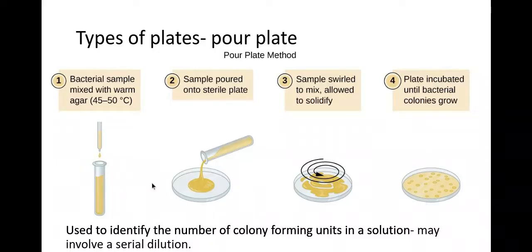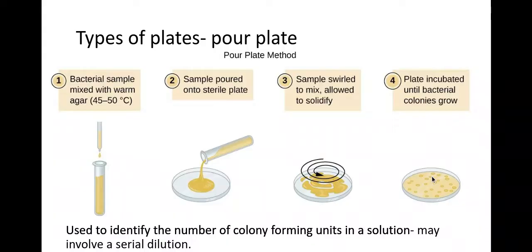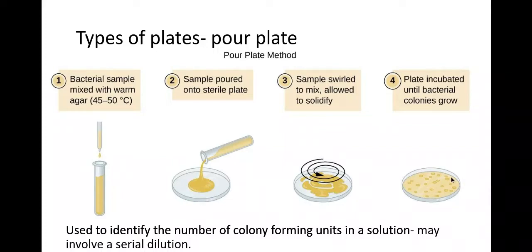However, if the sample is too concentrated, you'll get too many bacterial colonies forming on the plate and you won't be able to count them. So if you want to know how many colonies are in your bacterial sample, you may need to dilute the sample first so that you can count the number of colonies, and then multiply that up by how much you've diluted the sample.